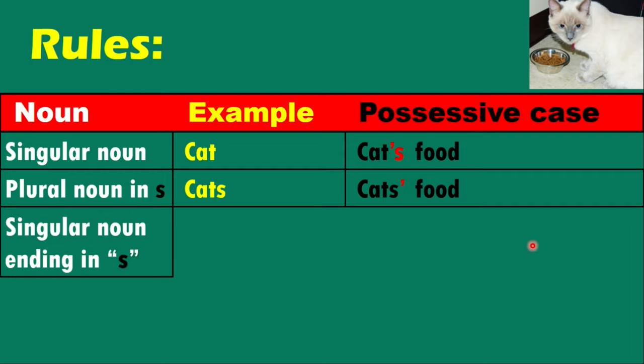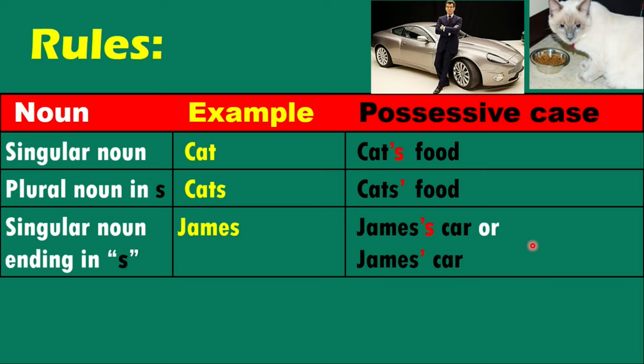For a singular noun ending in s, for example James — James's car — you can use apostrophe-s or just an apostrophe; both cases are correct. James's car or James' car, and the pronunciation is also the same.